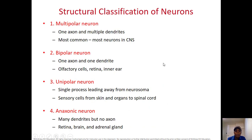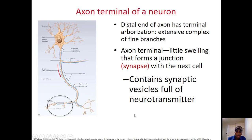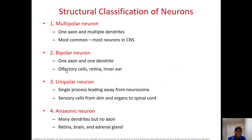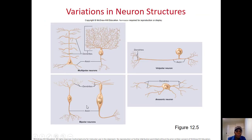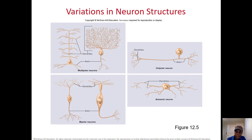Based on structure, how many types of neurons do we have? We have four. The multipolar neuron has many dendrites and one axon. The bipolar has two sides — dendrites on one end and an axon at the other. The unipolar has just one extension coming out of the neurosoma, which then divides into a dendrite and an axon. And the anaxonic has no axon. So we have four types based on the number of poles: multipolar, bipolar, unipolar, and anaxonic.